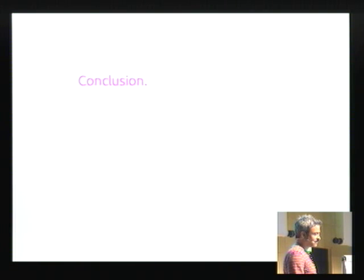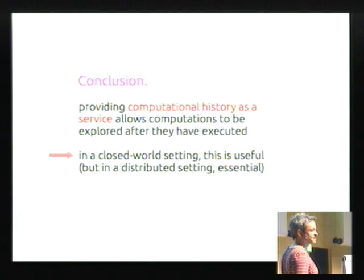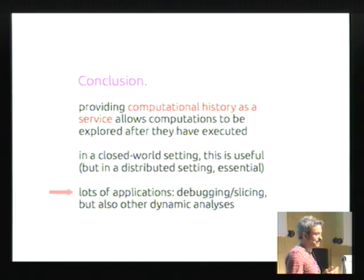So what I hope to show you is that if we imagine that computational history is something that's pervasively available in an execution environment, that there are some interesting opportunities. And I hope to show you that even in a closed world setting, it's already quite useful, because you can move smoothly from testing and using to debugging and comprehending. But in a distributed setting, it's more than useful, it's almost essential, because sometimes we don't have the authority or the means to rerun executions that live out there in the wider world. So in those settings, we need to imagine execution history is provided as a service. And there are many applications beyond debugging and slicing, basically any kind of dynamic analysis. And that's it, thank you.